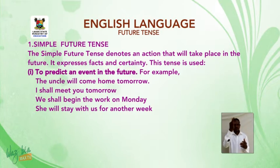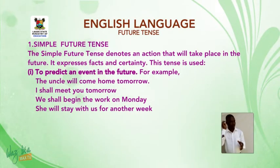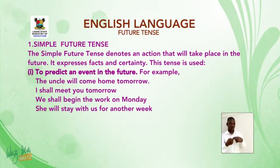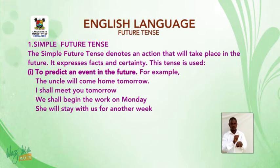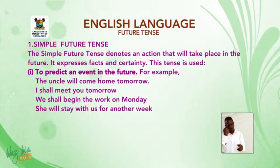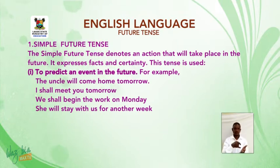Uses of simple future tense. First, it is used to predict an event in the future. For example: The uncle will come home tomorrow. I shall meet you tomorrow. We shall begin the work on Monday. She will stay with us for another week. These examples express facts and their certainty.